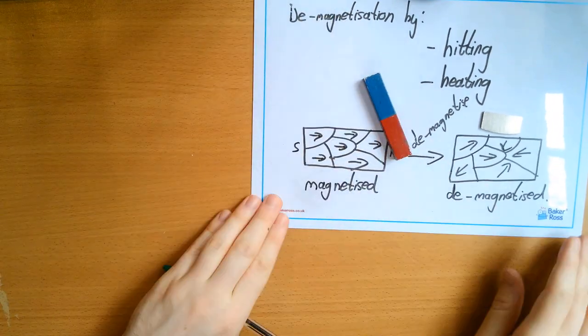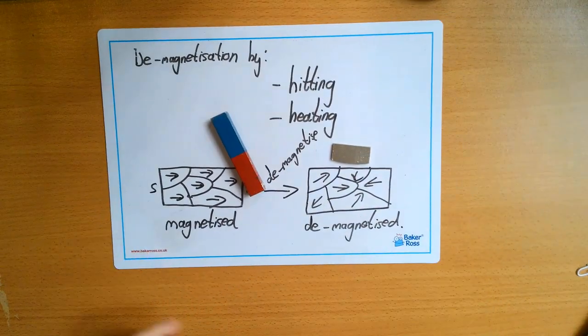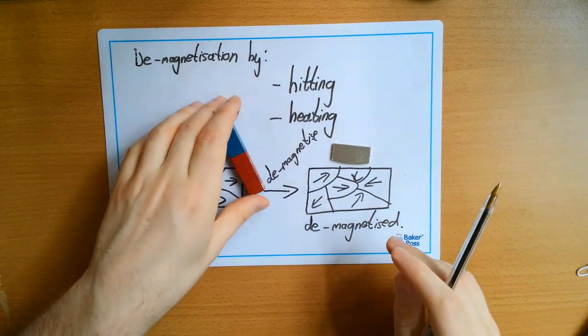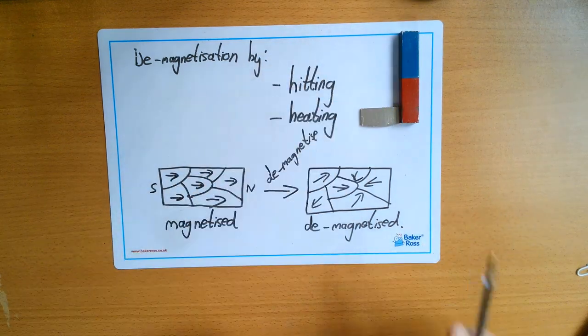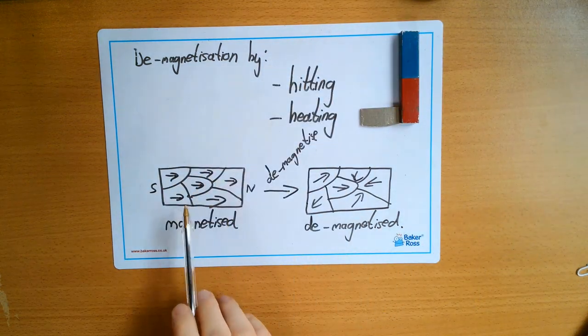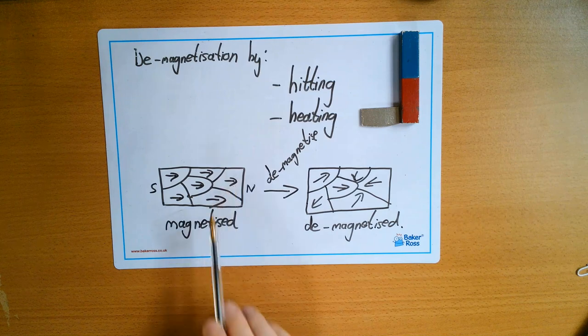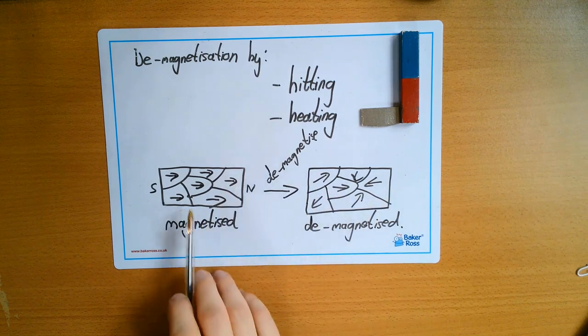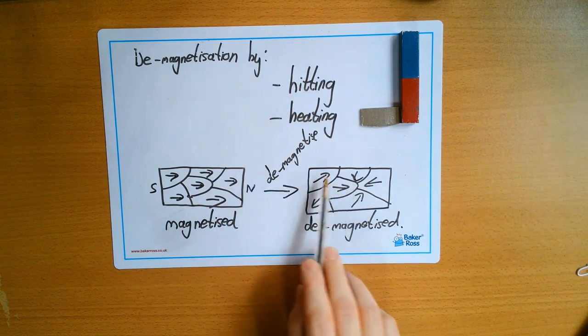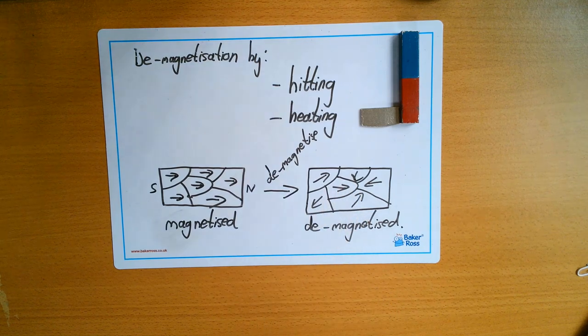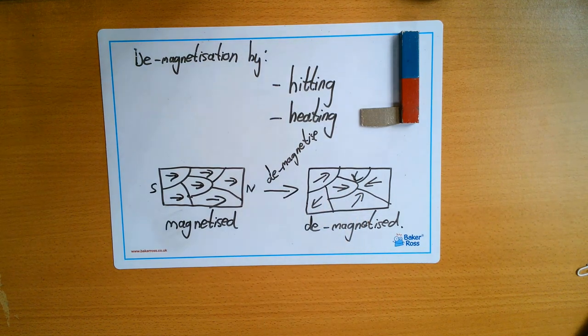So, that is demagnetization by hitting and heating. But, the key idea here is that a magnetized state is the domains lined up. Demagnetized is in random directions. And by these two processes, we sort of scramble the domains and make them point in random directions. Thank you.